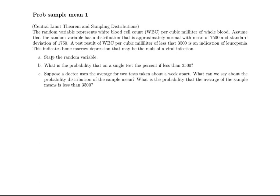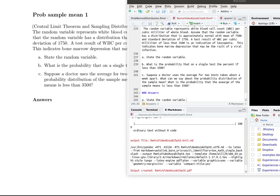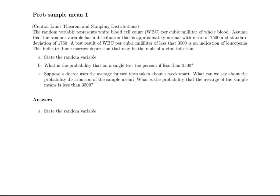In this situation we'll want to state what the random variable is, and then we'll want to calculate some probabilities. They're asking for two specific probabilities. In any written report we state the random variable first — it is what you're actually measuring. In this case, we're measuring the white blood cell count in whole blood.